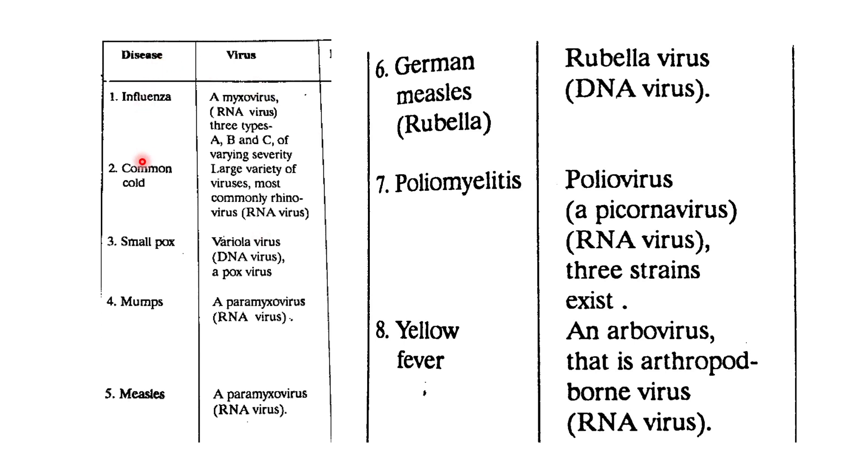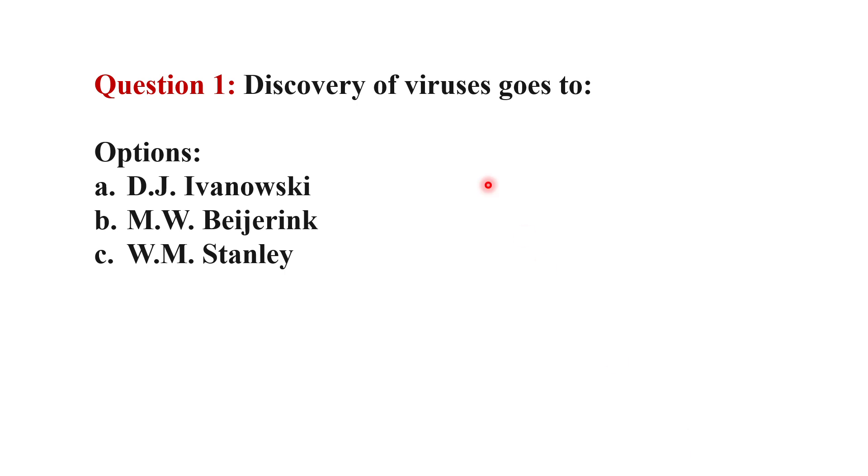These are a few viruses and the animal diseases caused by viruses: influenza, common cold, smallpox, mumps, measles, German measles or rubella, poliomyelitis, and yellow fever. It is important to remember yellow fever is caused by an arbovirus and is an arthropod-borne disease, and it is an RNA virus.